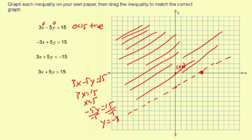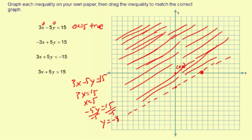If you have pencils, especially colored pencils, you can make really pretty graphs here — but this whole area gets shaded in. That's the graph for the first inequality.